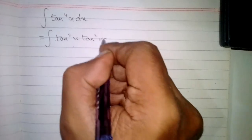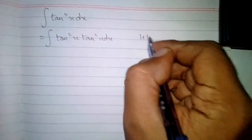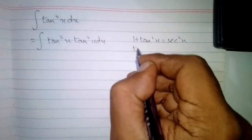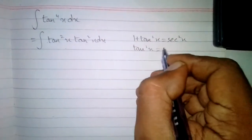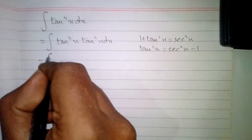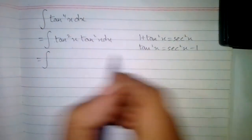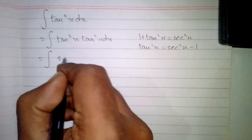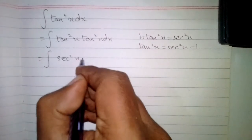In this video we will find the integral of tan⁴x. We can write tan⁴x as tan²x multiplied by tan²x. Now we know that 1 plus tan²x is equal to sec²x, so tan²x is equal to sec²x minus 1. We can write sec²x minus 1 instead of tan²x.